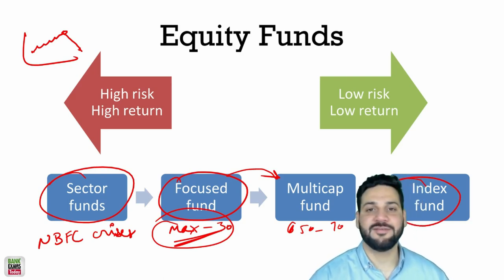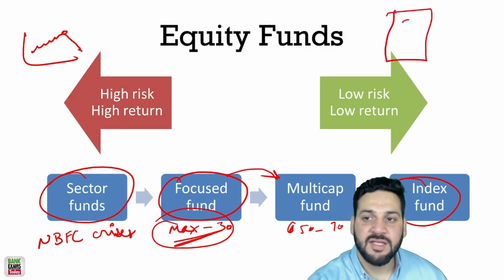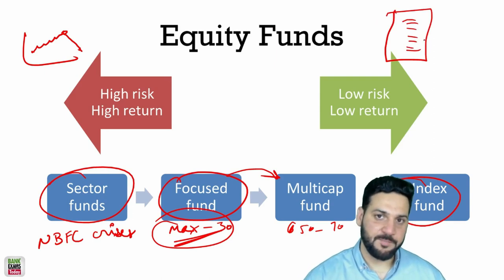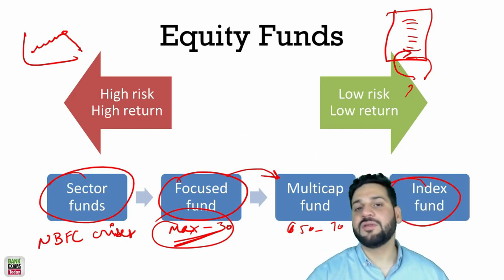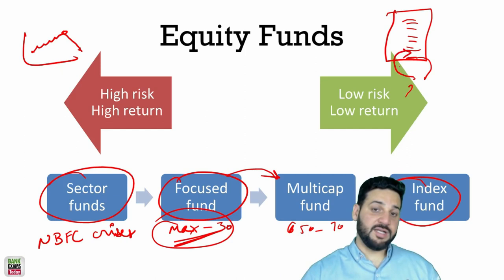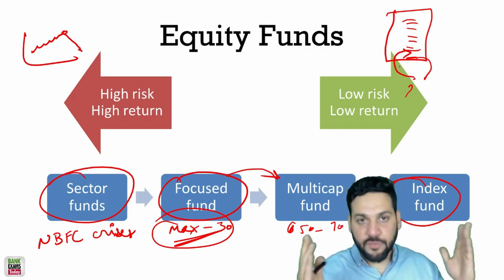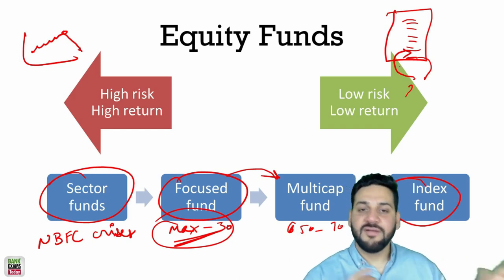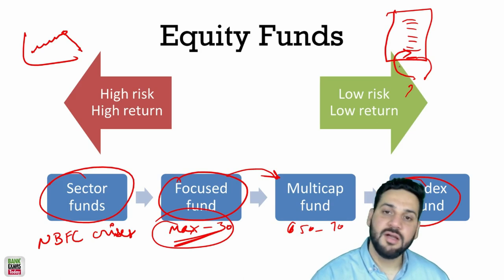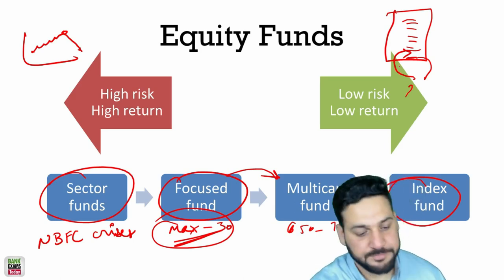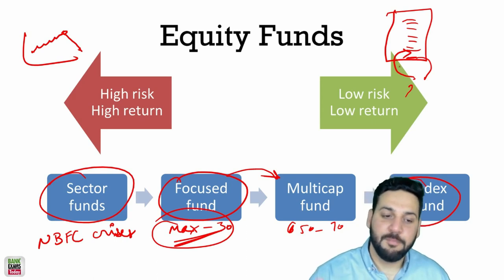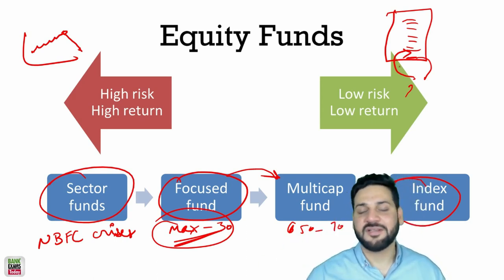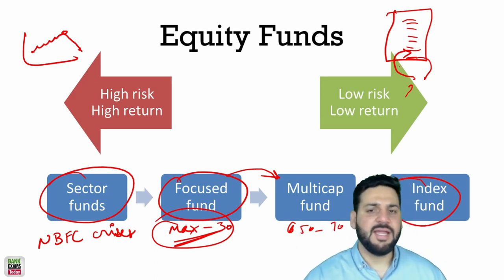Index funds are the safest equity funds. No human judgment is involved. In Nifty 50, for example, if a company in the index underperforms it gets replaced by a better-performing company automatically. This means no human decision-making errors. The expense ratio is also very low. Sometimes index funds even provide better returns than sector funds, focused funds, or multi-cap funds.